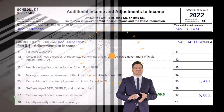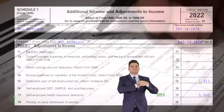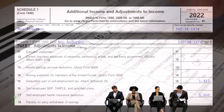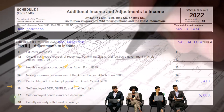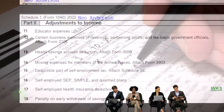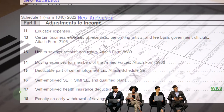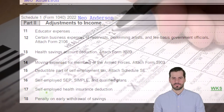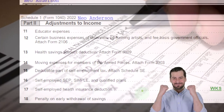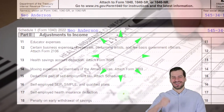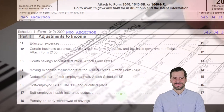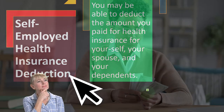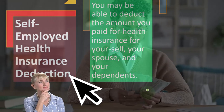Health insurance is a complex situation overall, and for self-employed individuals with their own businesses there's an added complication of how to handle health insurance. Notably, this deduction is not taken on Schedule C as you might expect — instead, Schedule C information is used to determine whether you qualify, and the deduction is placed on Schedule 1, Part 2.